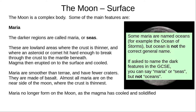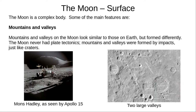You may be asked to name the dark patches in the exam. You can say Maria or Seas, but you must not call them oceans — you won't get the mark. Mountains and valleys are easy to identify and look similar to mountains and valleys on Earth. However, the Moon never had plate tectonics. Mountains and valleys on the Moon were formed by asteroid and comet impacts.